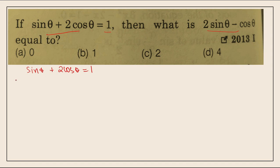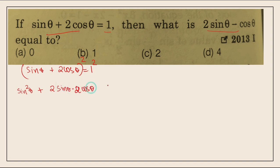We will use squaring on both sides. We will expand using the a plus b whole square formula, so we expand sinθ plus 2cosθ whole squared equals 1 squared.